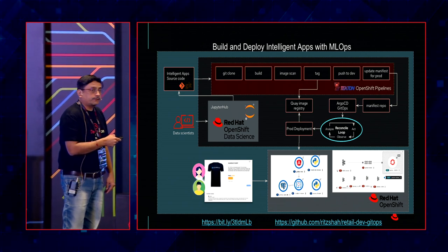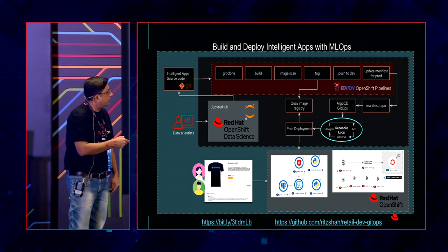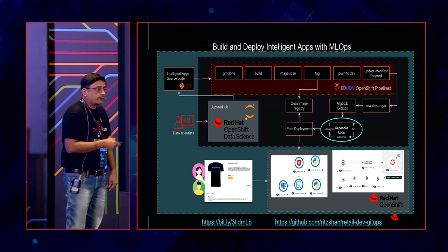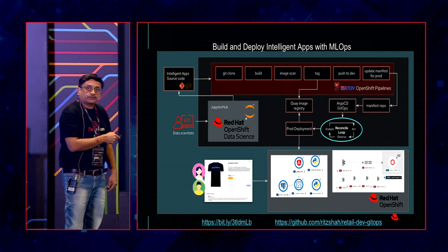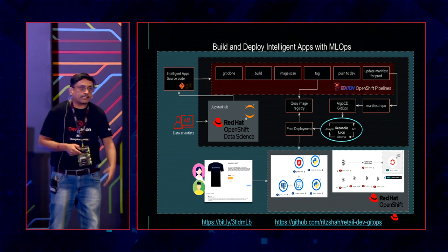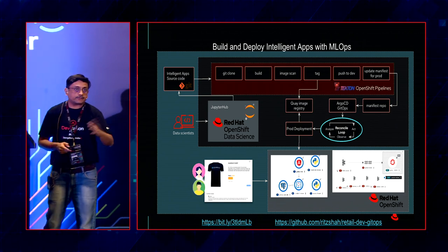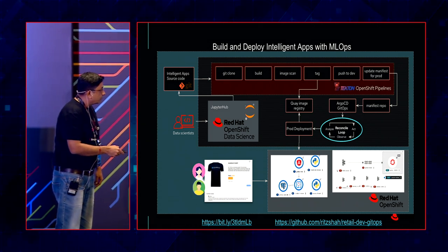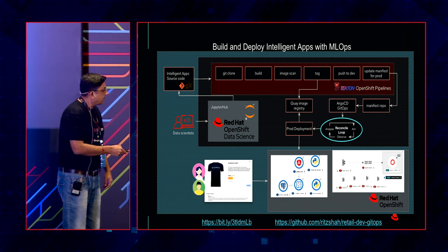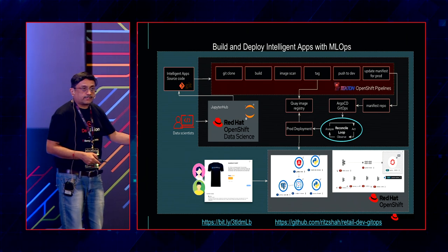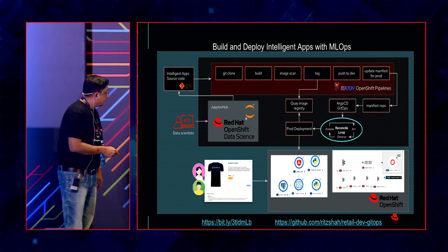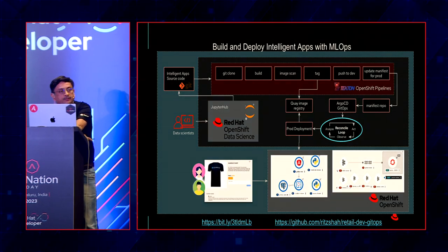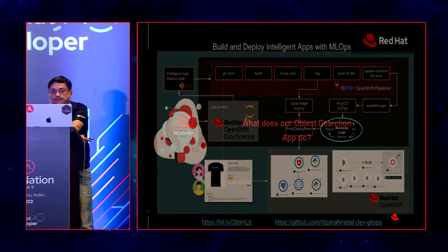The manifest repo goes into Argo CD. Argo CD does a reconcile loop, always monitoring your prod environment. Whenever there is a push to the manifest repository and it's merged, the reconcile loop triggers and updates prod to work with the new image tag or manifest change. This is the retail dev GitOps repo with your Argo CD and OpenShift Tekton pipelines. You can go check the source code there. Everything is open source — you can browse and leverage it in your environment.